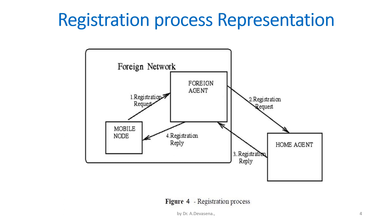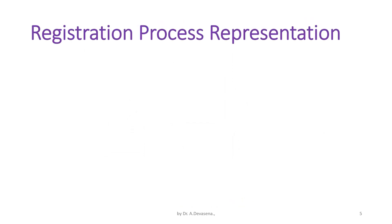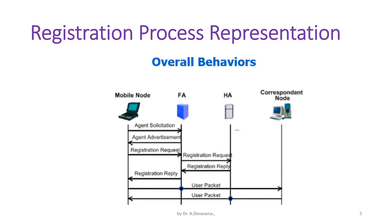Let us see the overall behavior of the registration process. Agent solicitation is done by the mobile node, followed by an agent advertisement. Then the mobile node sends the registration request to the foreign agent. The foreign agent sends the request to the home agent. The home agent sends the registration reply to the foreign agent, which sends the reply to the mobile node. Then data is transferred from the mobile node to the correspondent node in the form of user packets.